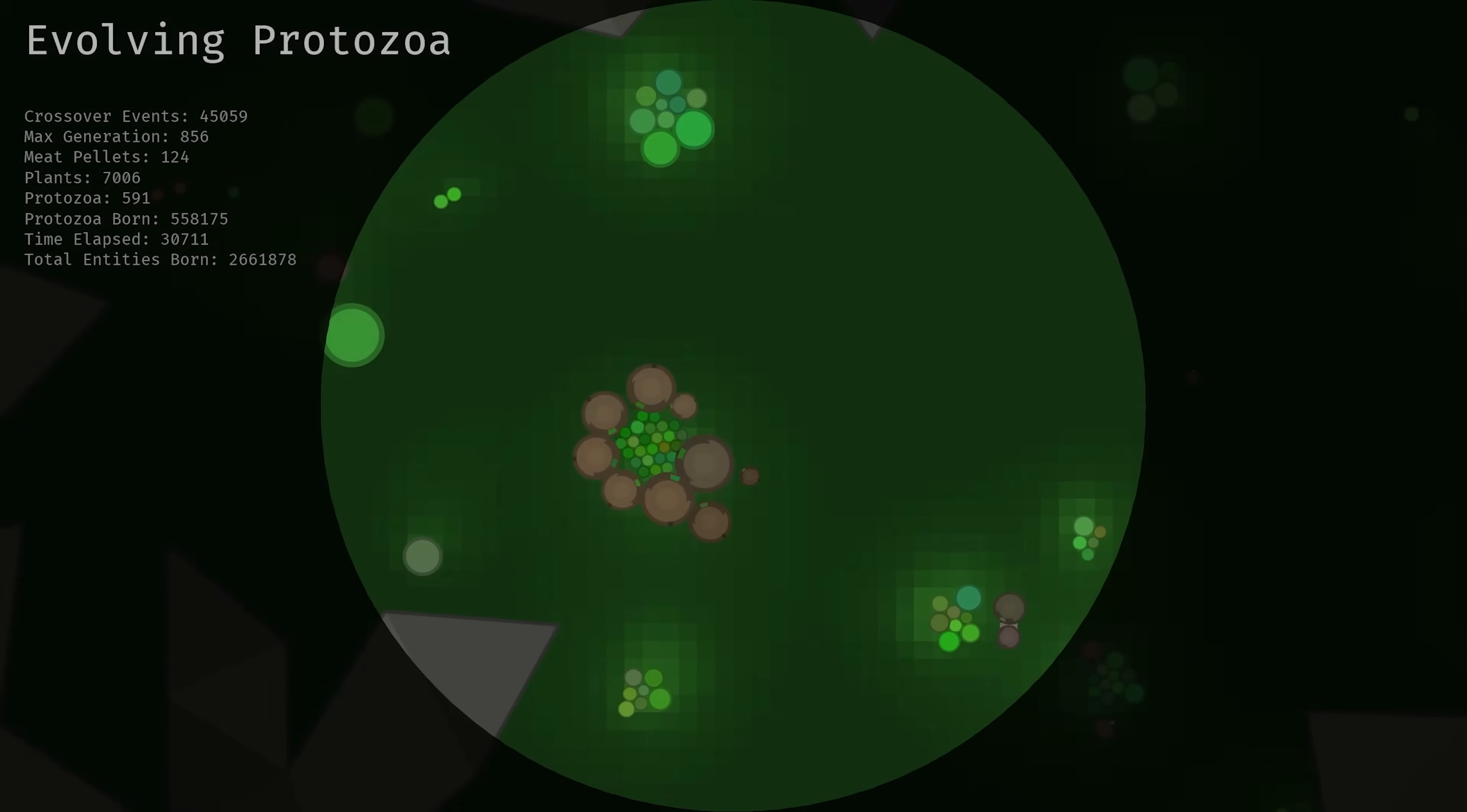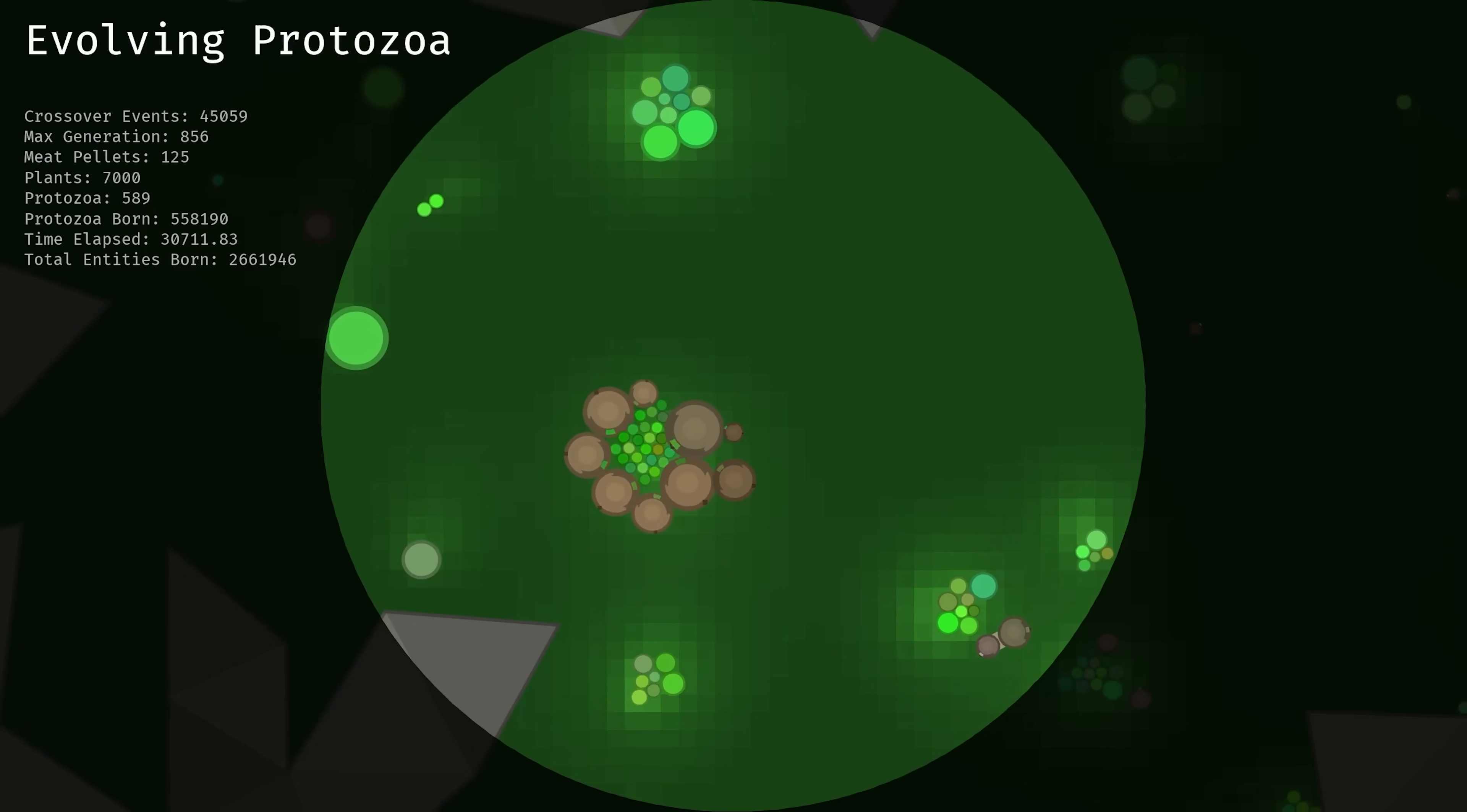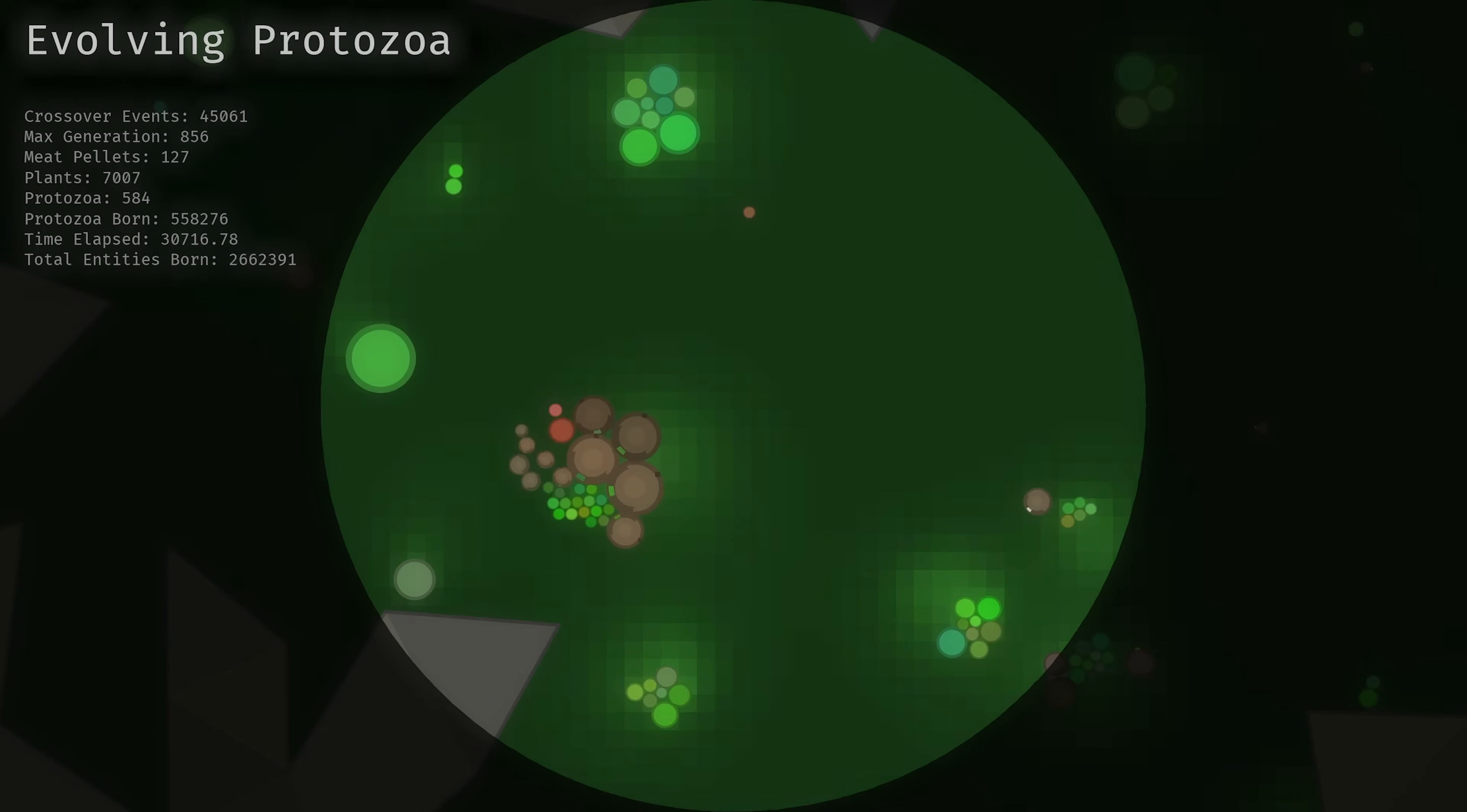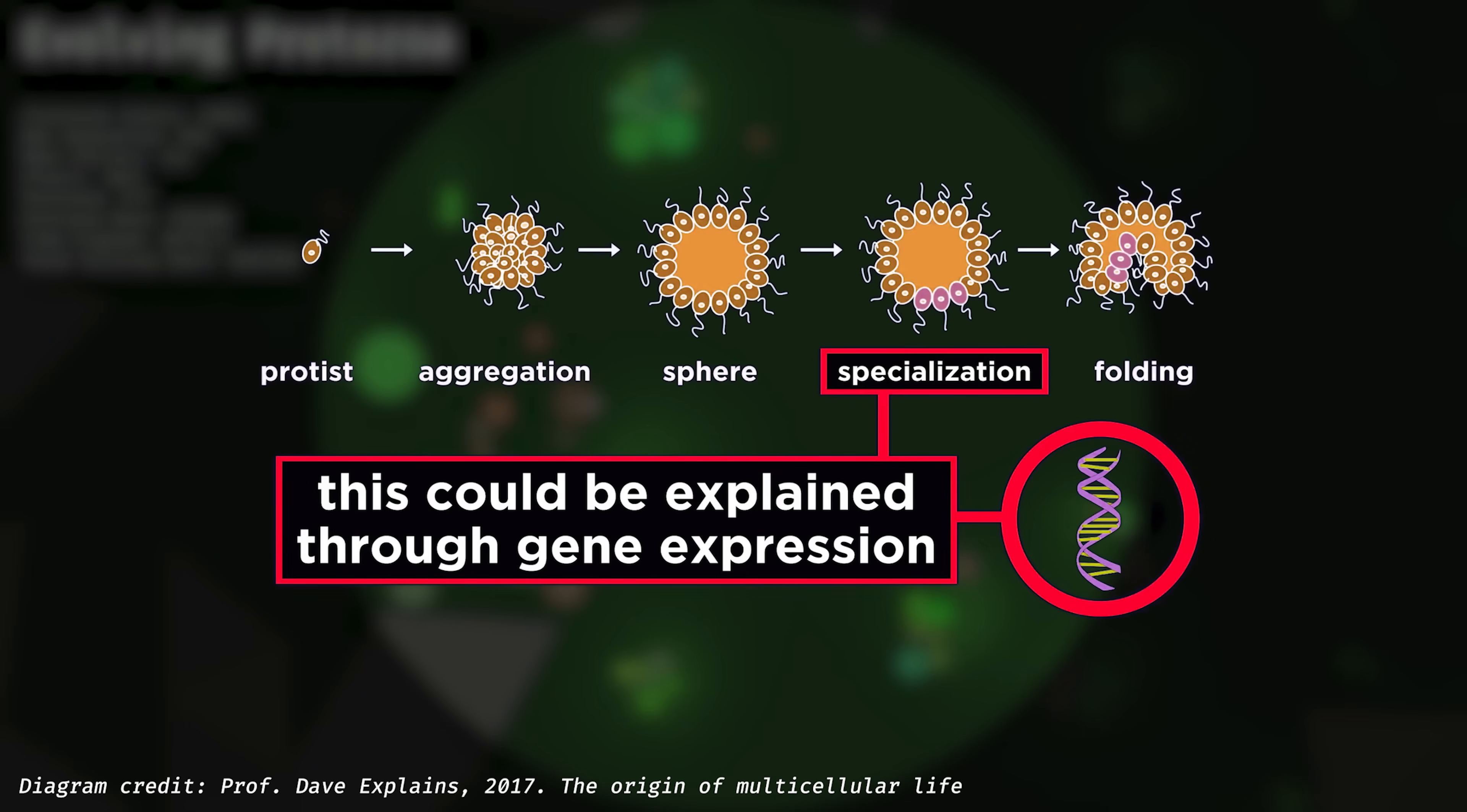In the last section of this video, I'd like to talk a little bit about my further plans for this project, some of which I've already started implementing the code. As touched upon previously, I'm mostly interested in multicellular systems. However, I'm yet to mention some of the most interesting ideas regarding how this is thought to have evolved in real life. To understand this, we first have to talk about cell specialisation and gene expression.